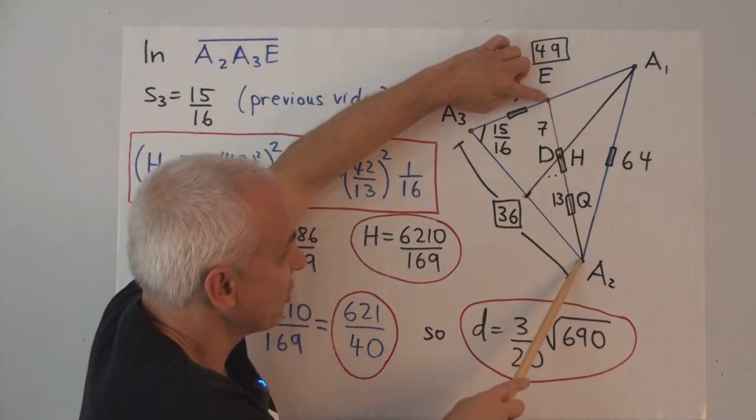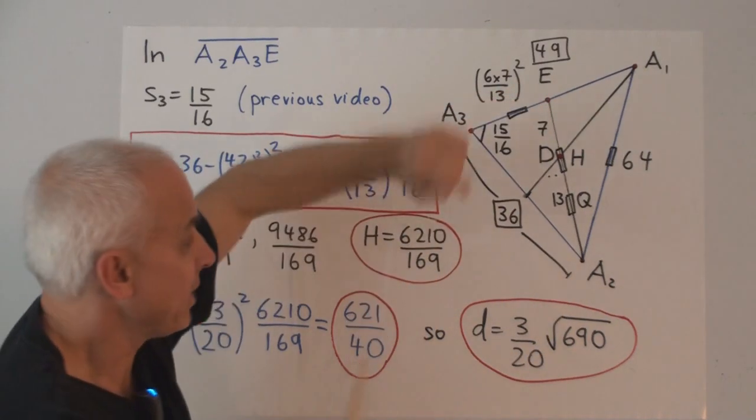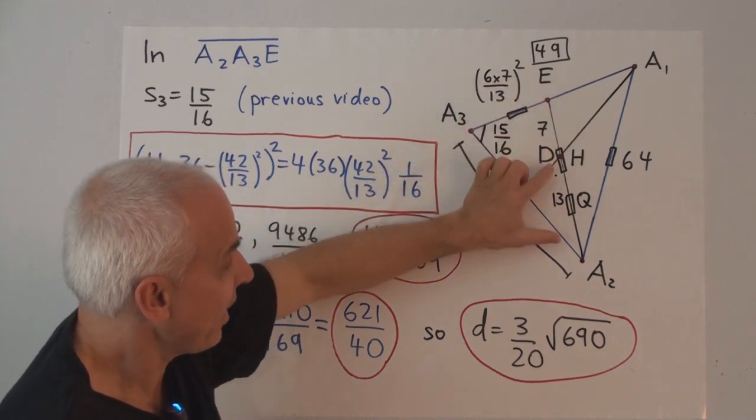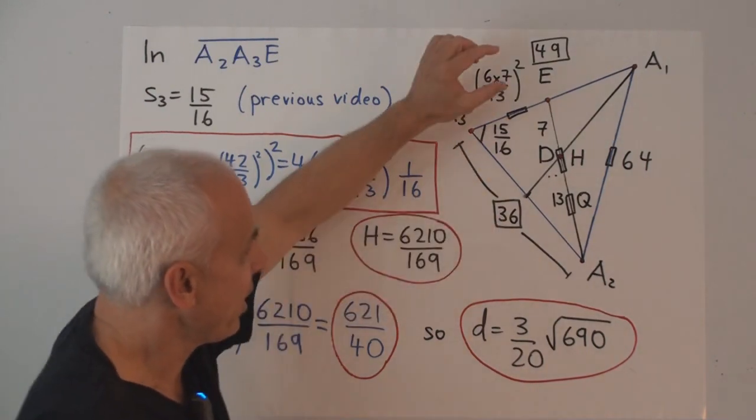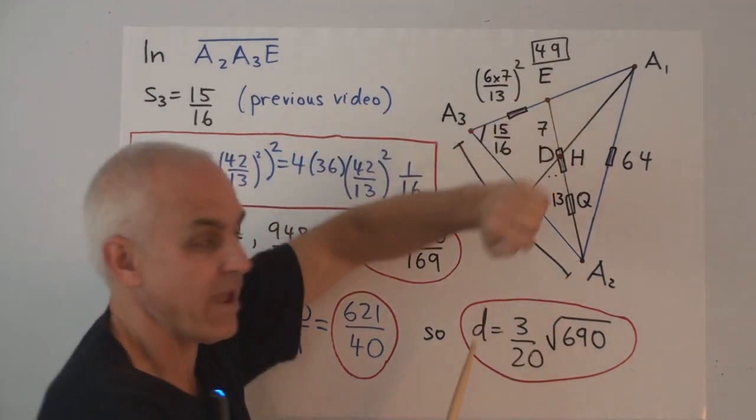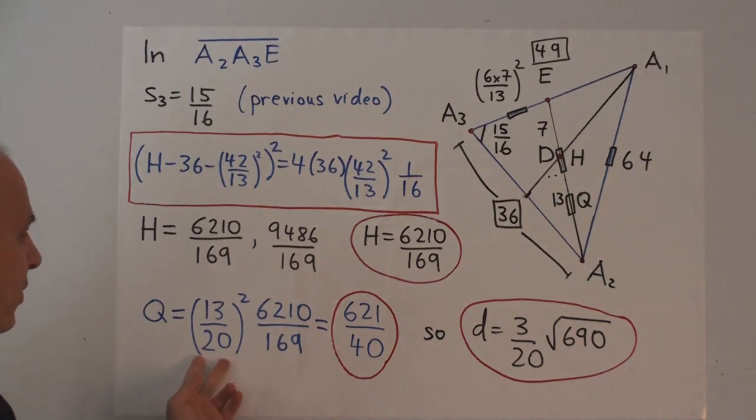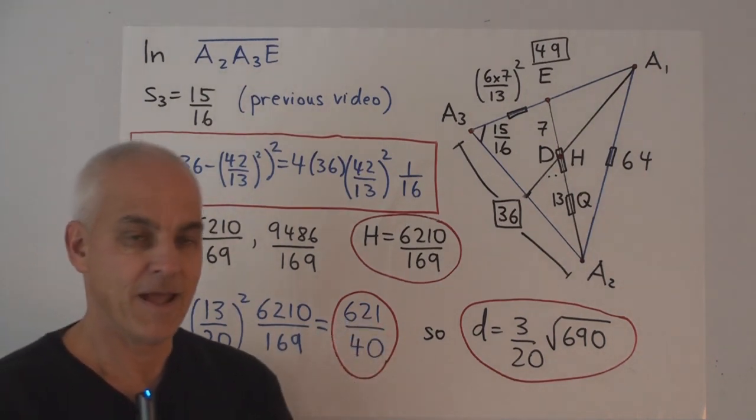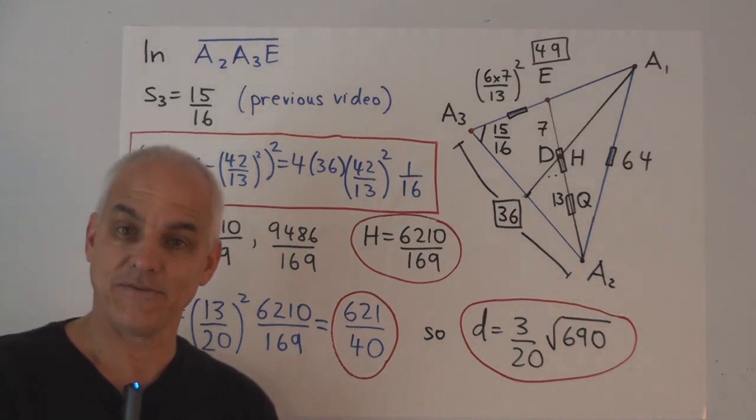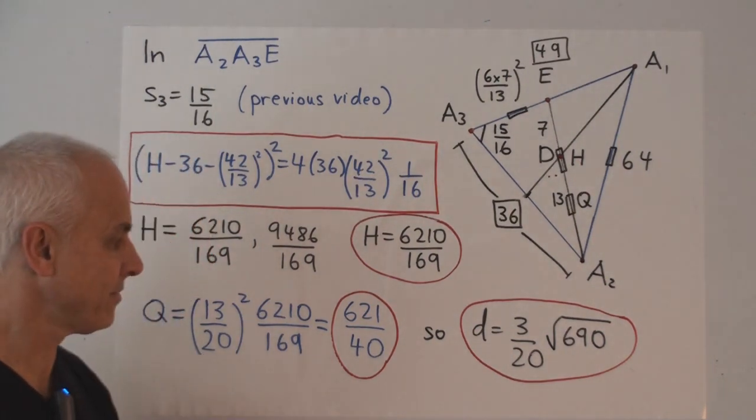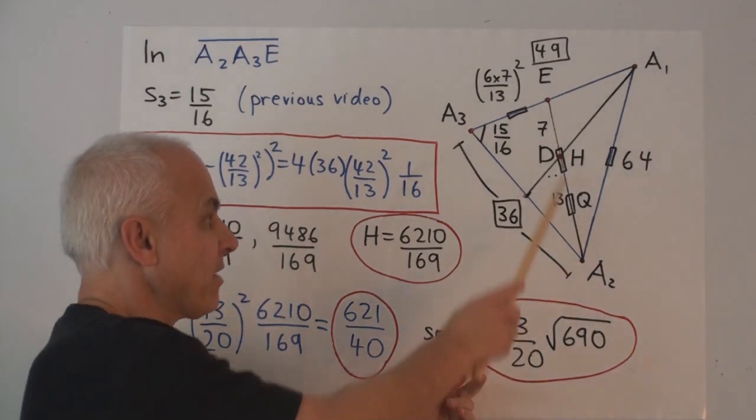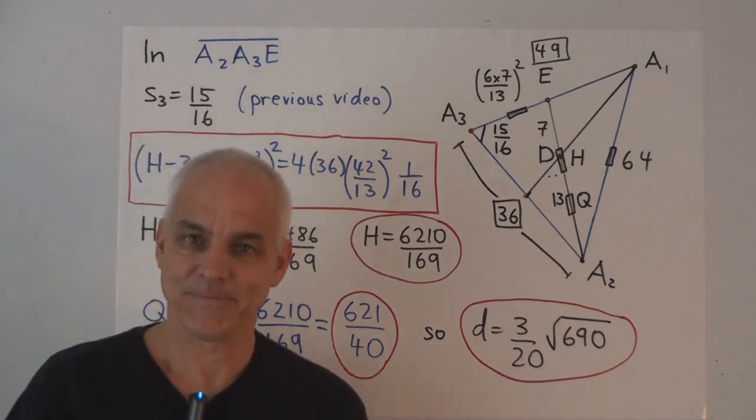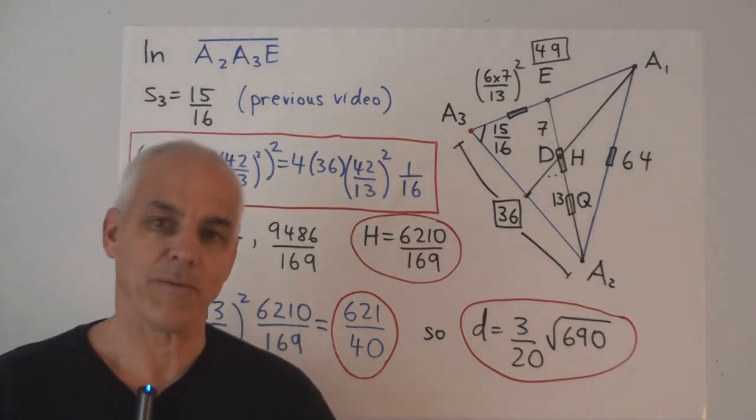And now, since we know this H, the Q that we're after, the quadrant from here to here, is a certain proportion of that. But we know that the affine relation between this and this is 7 to 13. So, Q will be (13/20)² of H. (13/20)² of H turns out to be 621 over 40. That's the same value that we got in the last video, where we solved this in a more traditional way. Taking the square root in order to get a length, gives us D equals 3/20 of square root of 690. So, we've solved this 6, 7, and 8 triangle problem in two different ways.